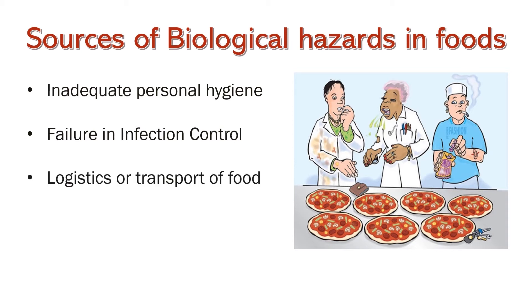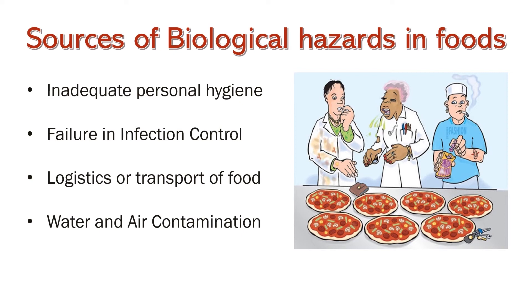Logistics and transportation of bulk food and food products is a very complex procedure, and there is often a long gap between processing and consumption, which can be a major reason for contamination of food products by pathogenic microorganisms. Water and air contamination are also factors — if the water used for processing is contaminated or the air quality of the processing area is poor, it can play a major role in contaminating food and food products.